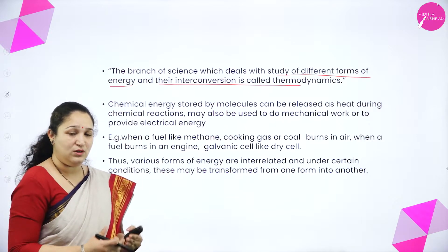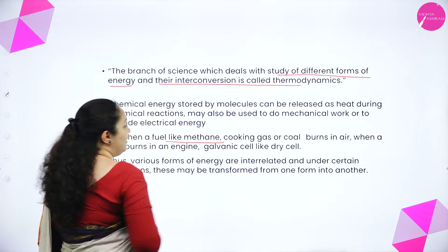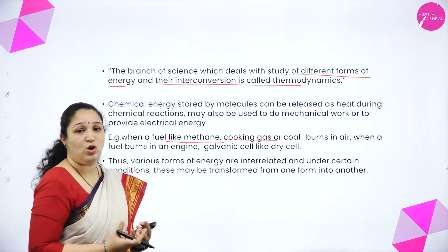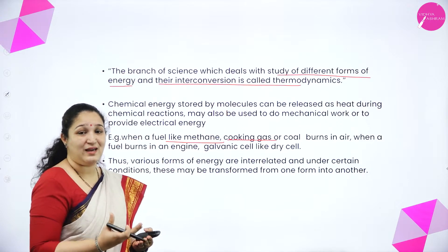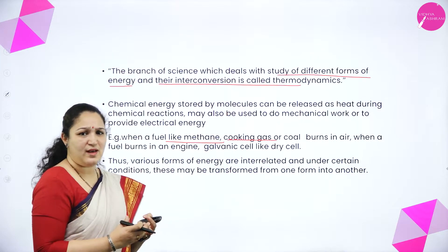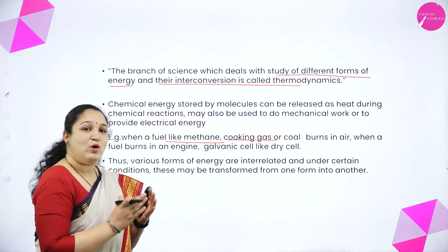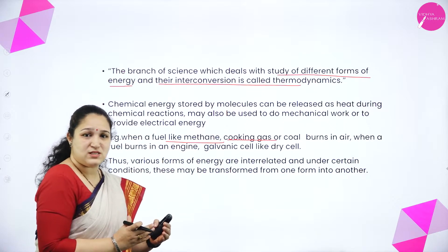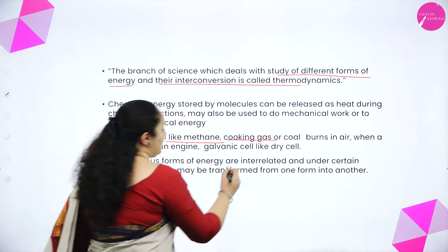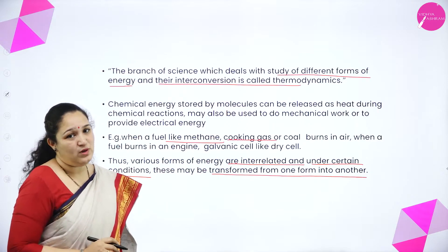We are going to study about the interconversions of different forms of energy. For example, by burning methane gas — or cooking gas — when it is burnt in air, it produces a lot of heat which is used in different forms: either for doing mechanical work, or take the example of a battery, which is a galvanic cell — a chemical reaction converted into electrical energy. The various forms of energy are interrelated and under certain conditions may be transformed from one form to another.